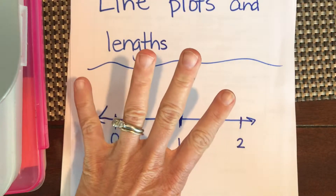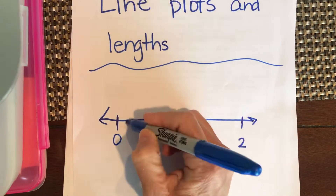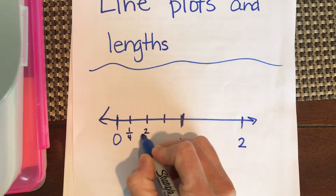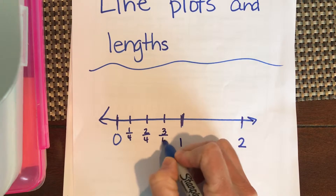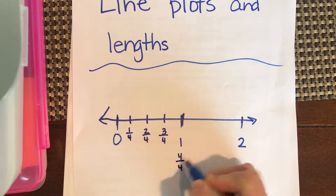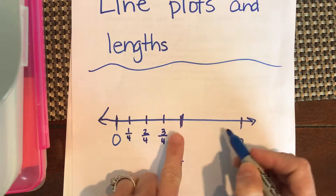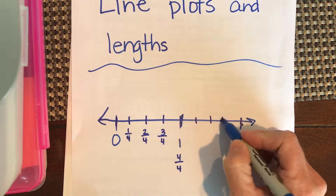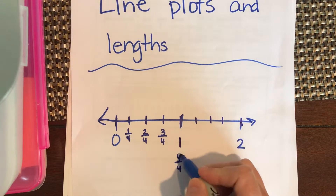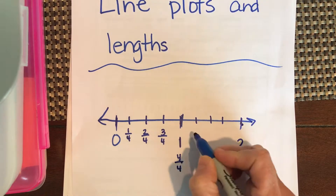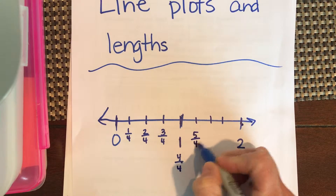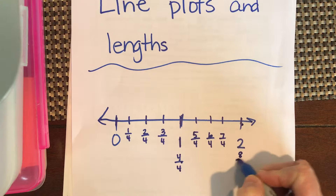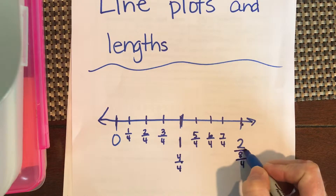If we divide this section into four sections, we draw three lines: one-fourth, two-fourths, three-fourths, four-fourths. In between one and two we do the same — three lines — giving us five-fourths, six-fourths, seven-fourths, and eight-fourths.